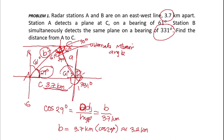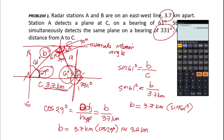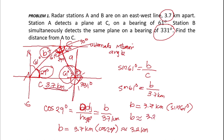We could also use the 61-degree angle. Using sine: sine 61 degrees equals opposite B over hypotenuse 3.7 km. So B equals 3.7 km times sine 61 degrees. Computing in a calculator, B is approximately 3.2 km — the same result either way.